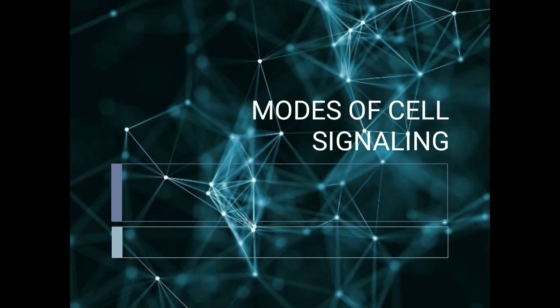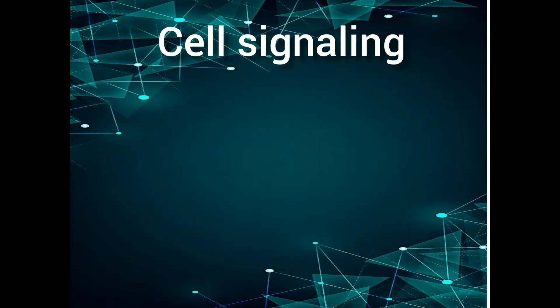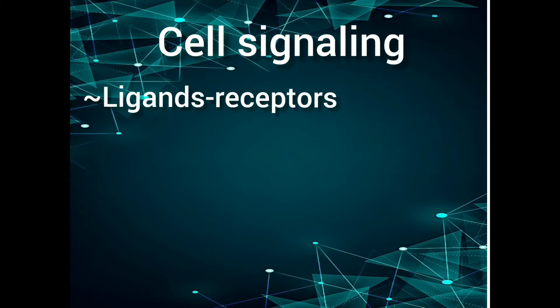First, let's focus on what is cell signaling. When we talk about cells, we have a question about how cells communicate — that is due to cell signaling. There are different molecules which transmit signals between the cells of multicellular organisms. These molecules, called ligands, bind to receptors present on the target cells.